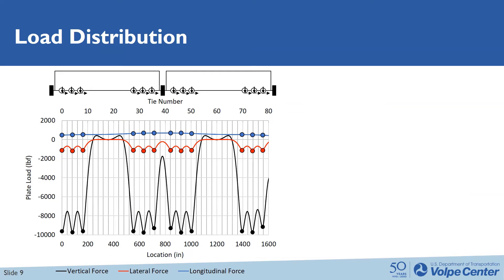This figure shows the typical results obtained from the analytical model, under two locomotives, each with six axles. The black curve shows the vertical force, the red curve shows the lateral force, and the blue curve shows the longitudinal force. For the vertical and lateral force, you can see twelve distinguished peak values under each wheel load. However, for the longitudinal force, the effect of wheel load is not very evident in this curve. This is because the stiffness of the longitudinal springs assumed in the model is not as large as the lateral and vertical springs. Also, you can see a positive magnitude of the vertical force, which indicates the plate was uplifting at this location.